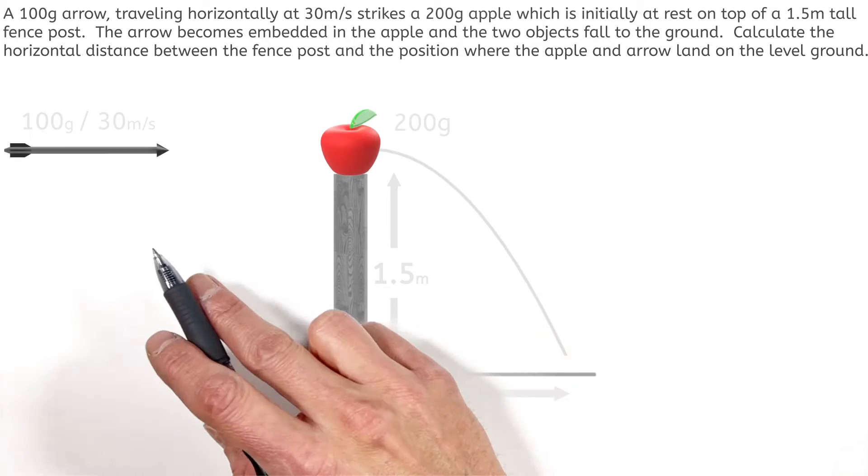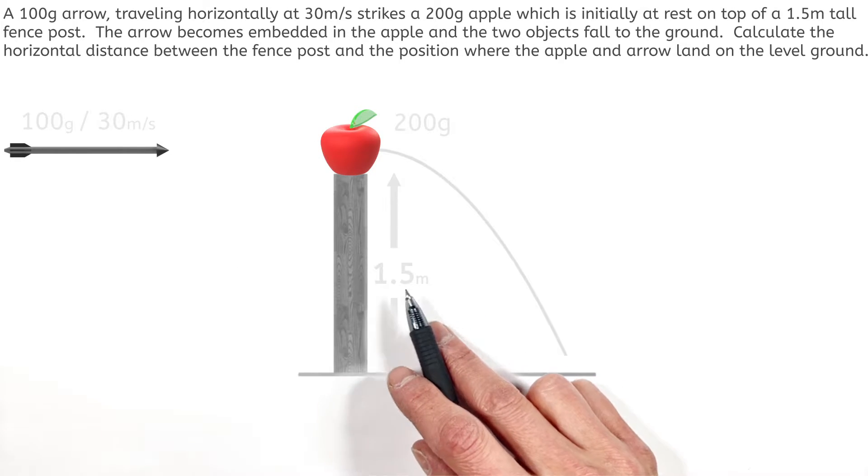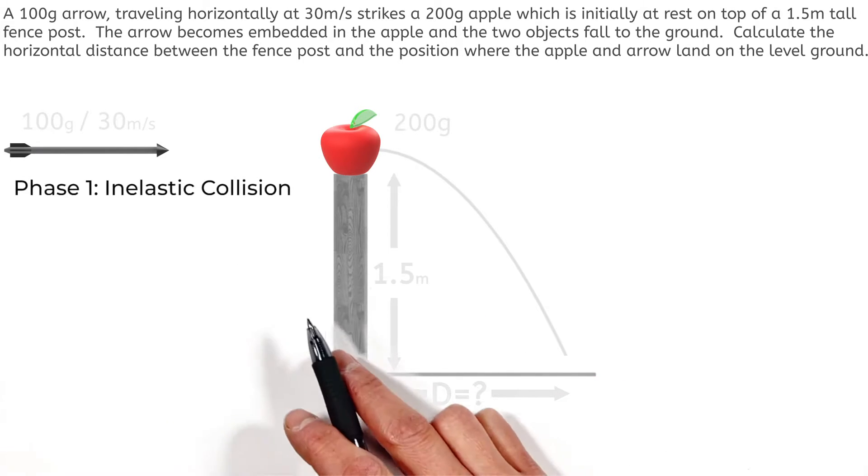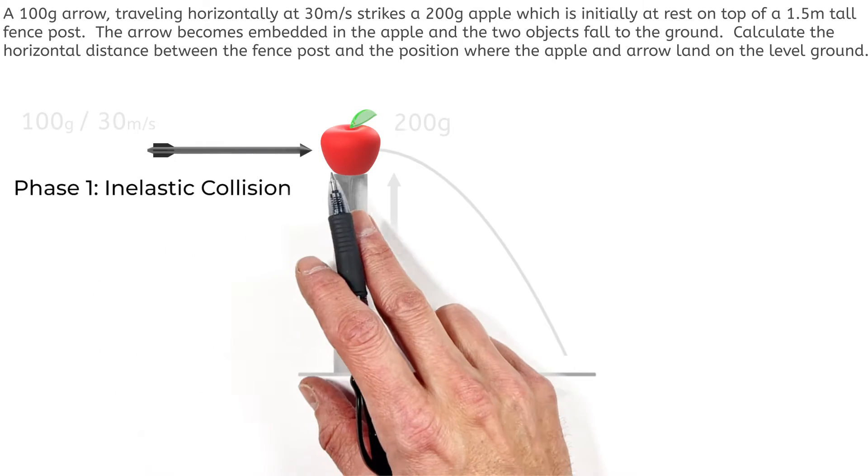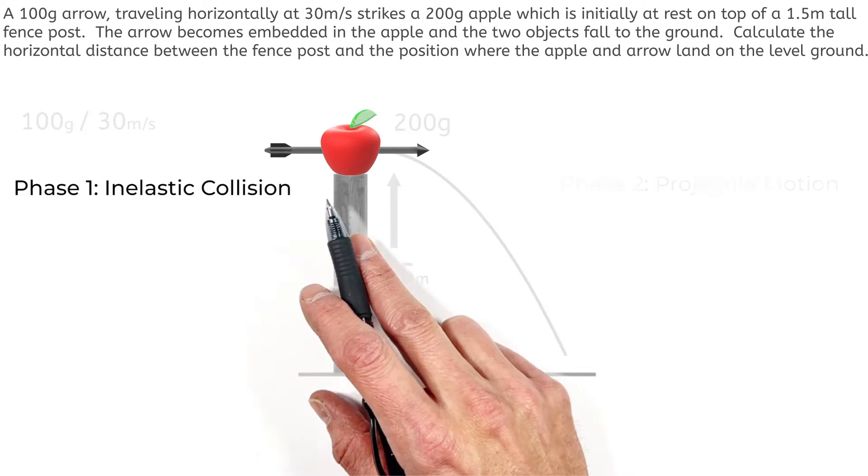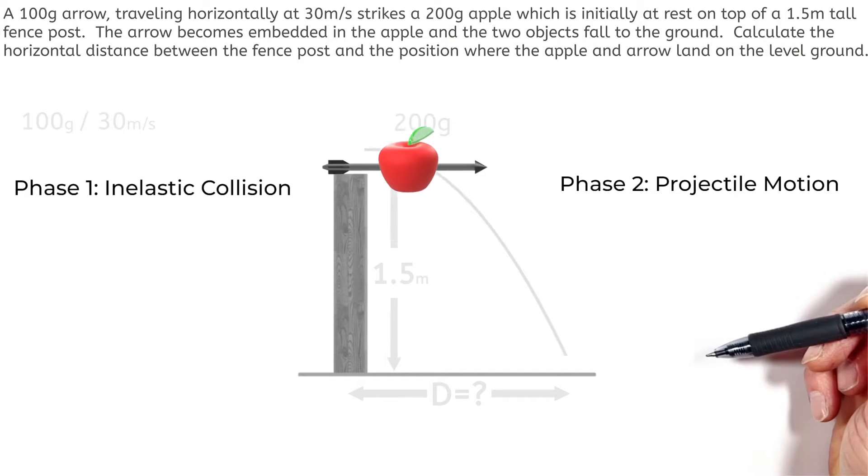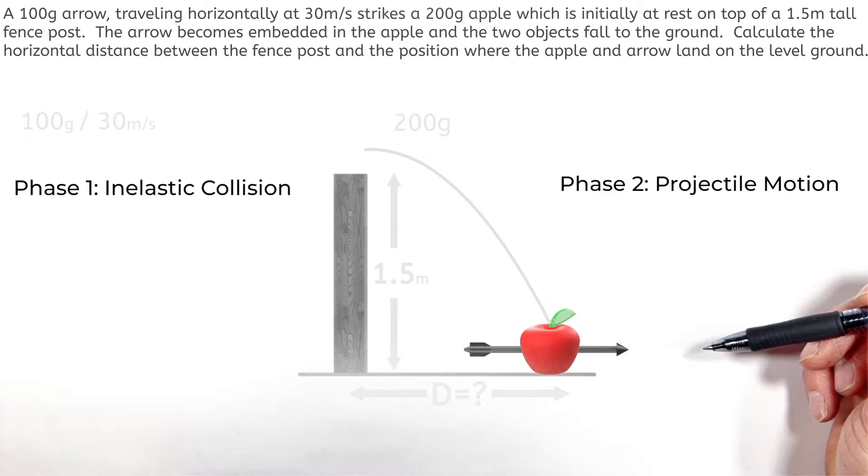Now this problem can be broken up into two different phases. The first phase of this problem is centered around the collision between this arrow and this apple. And the second part of the problem is really a projectile motion problem as the apple and arrow travel from the top of the fence post to the ground.